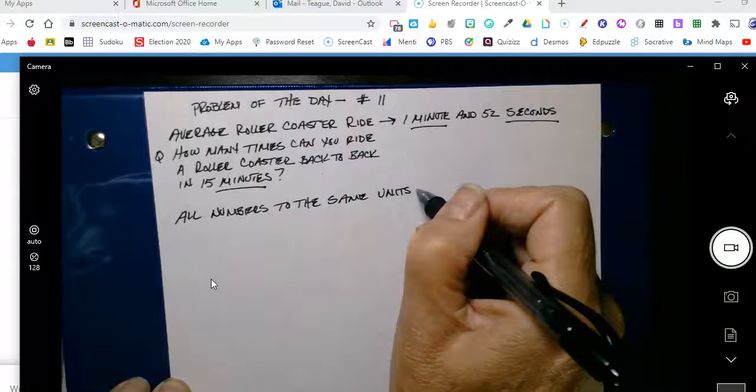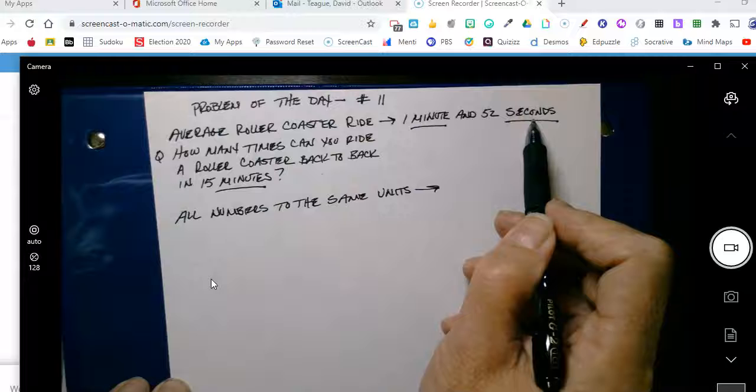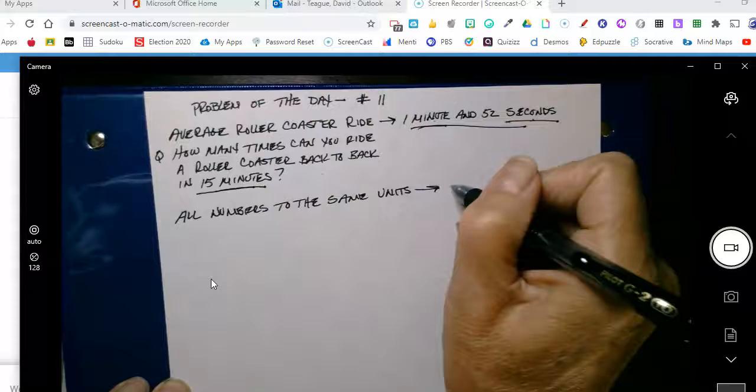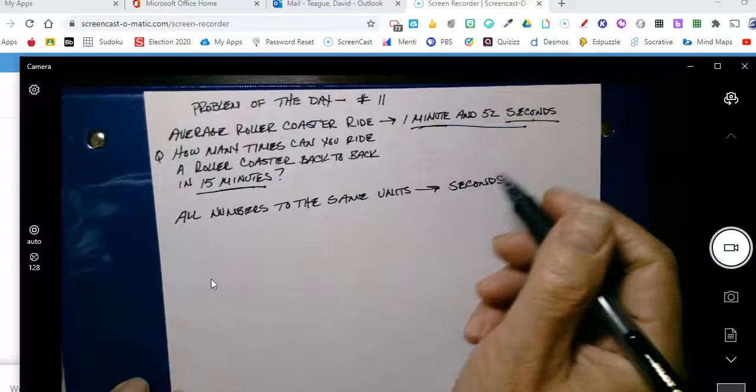So what I'm going to do is I'm going to convert, because I have seconds here, and that's the smallest one. And we know there's 60 seconds in a minute. So what we're going to do is we're going to convert 15 minutes, and we're going to convert this to seconds. So all numbers are the same units, which is going to be seconds.